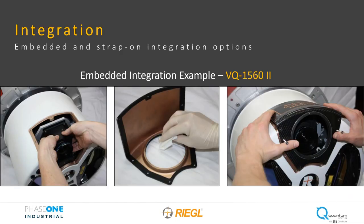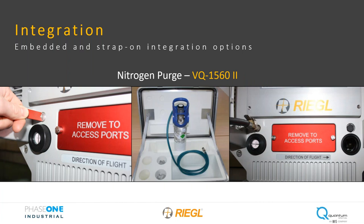A closer look at the mounting of a Phase One camera inside the nose cone of the 1560 reveals the camera is rigidly mounted to the optical chassis to ensure maximum accuracy and reliable alignment to the IMU and laser system for direct georeferencing. The camera is also easily accessible via a removable cover with an optical glass window for sensor protection and distortion-free image collection. Nitrogen purging is used following reassembly to displace moisture and oxygen, and desiccant cartridges provide further protection from high humidity environments.